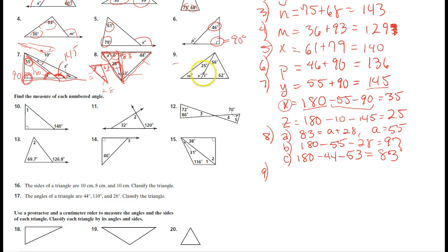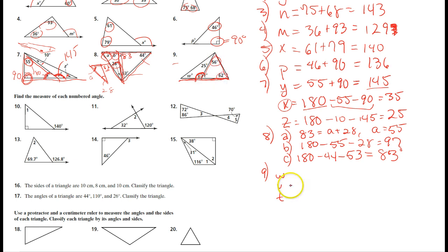Number nine. Let's look at V first. V is an exterior angle to this triangle because one of the sides was extended. So V equals fifty-six plus sixty-two, which is one hundred and eighteen. Now, if that's one hundred and eighteen, then W plus one hundred and eighteen plus twenty-five are the angles inside a triangle, which always add up to one hundred and eighty.